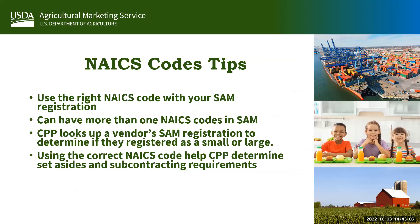A few NAICS code tips: make sure you are using the right NAICS codes when you register in SAM. If your company manufactures multiple products, you can have multiple NAICS codes. NAICS codes and their size standards are used by commodity procurement to determine specific contractual requirements such as set-asides and subcontracting. So please choose the right NAICS code when you register in SAM.